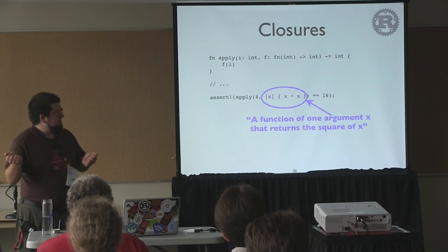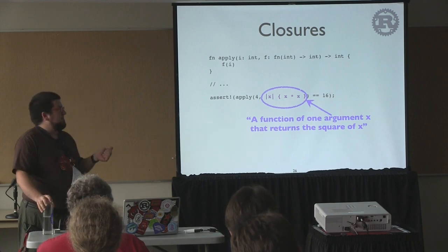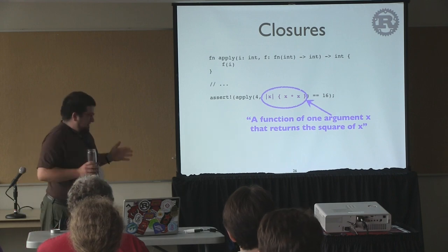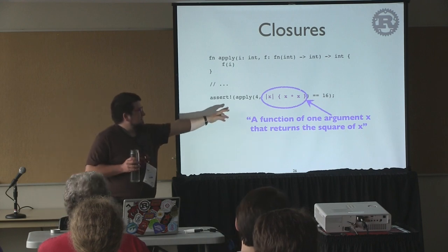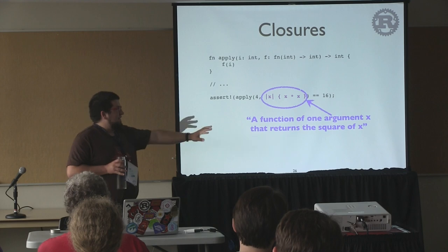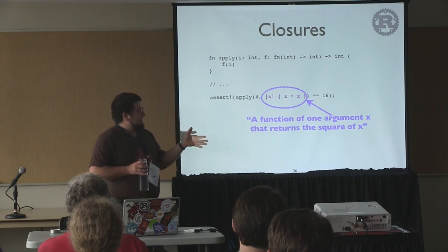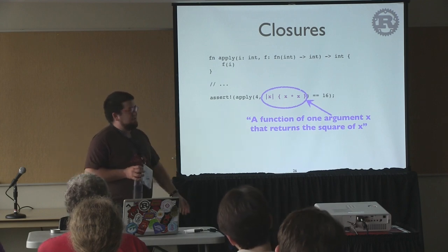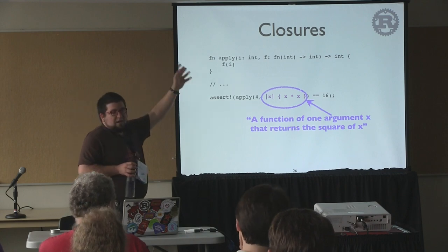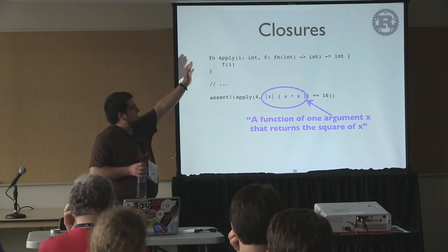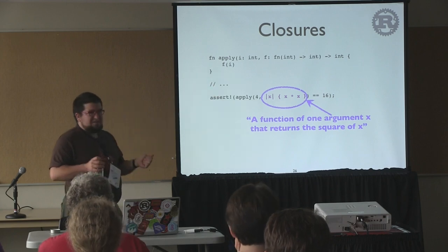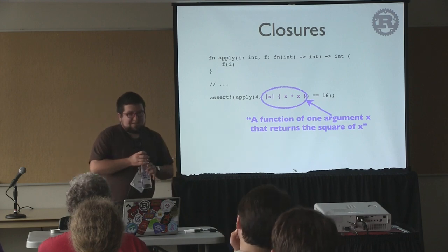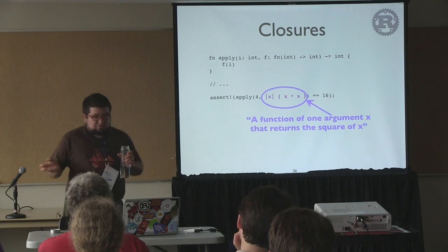Rust has closures — anonymous functions. The syntax '|x| { ... }' defines a function of x. You can pass functions as arguments to other functions, which is useful for defining many kinds of control structures. For example, you can write an apply function that takes an argument and a function and applies the function to the argument.